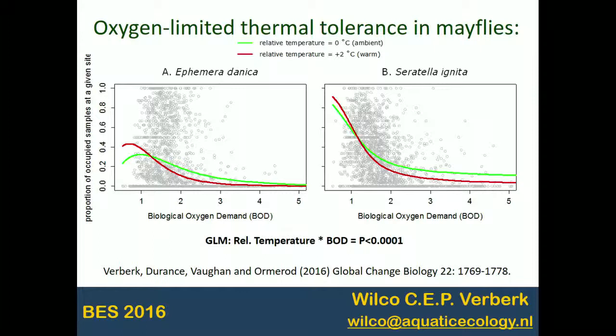If you plot the proportion of occupied samples within a given site — a value between 0 and 1 — there's a clear relationship with BOD. Increases in BOD mean more oxygen being consumed, so poor water quality and low oxygenation. These are very sensitive animals to low oxygen. Interestingly, this decline with decreasing oxygenation was actually exacerbated when considering streams that were two degrees above ambient — a clear strong interaction between relative temperature and BOD levels.